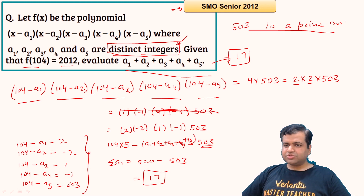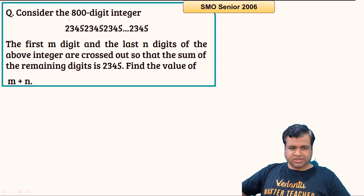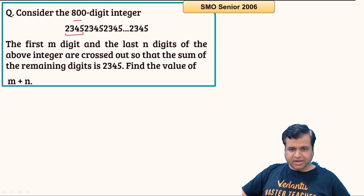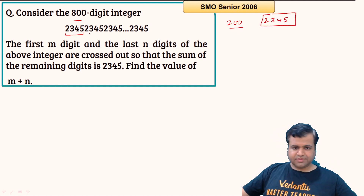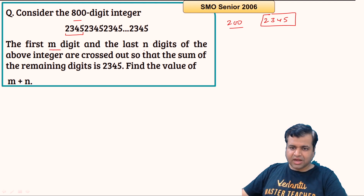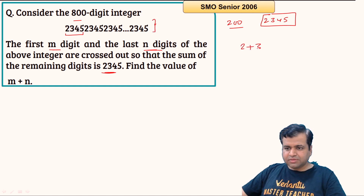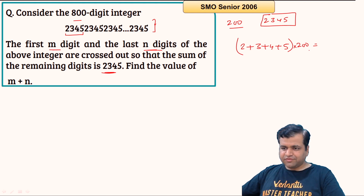Now let's move to the next question from SMO 2006 Senior Section. Consider an 800-digit number formed by repeating the group 2, 3, 4, 5 — so this group is written 200 times. The sum of all digits of the entire number is (2 + 3 + 4 + 5) × 200 = 14 × 200 = 2800. The first m digits and the last n digits are crossed out so that the sum of the remaining digits is 2345. This means the sum of the wiped-out digits is 2800 − 2345 = 455.